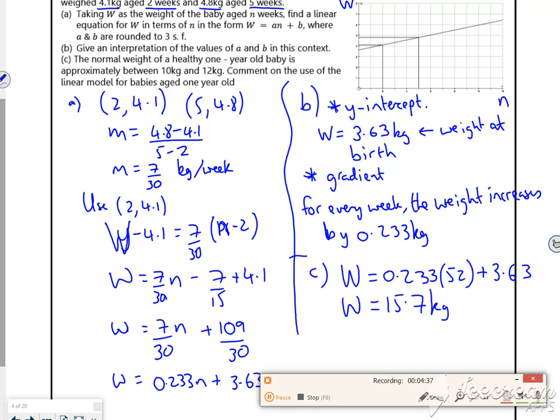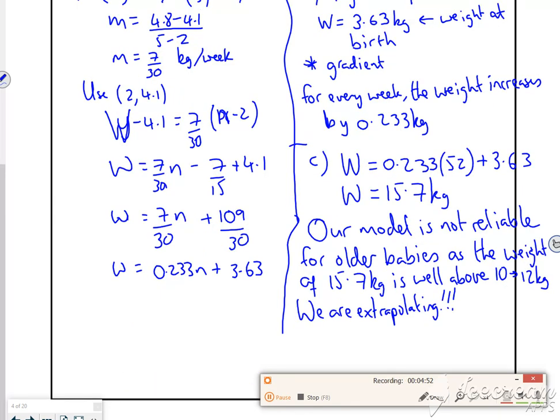So you look. So the question said between 10 and 12. But we've got 15.7. So it doesn't work. So you're going to have to write down some form of comment for that. There's 10 seconds left. I'll write it down what I've got and you can see it. There you go. Time's nearly up. Five more seconds left. So the model's not reliable. For older babies is the weight of 15.7 as well outside it.